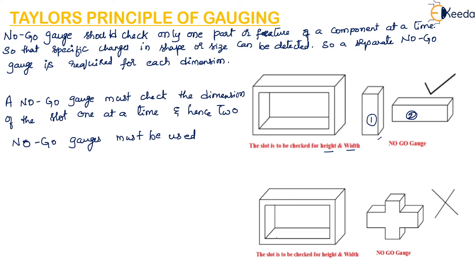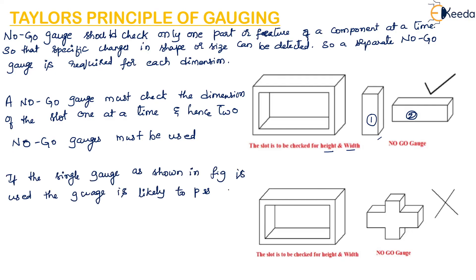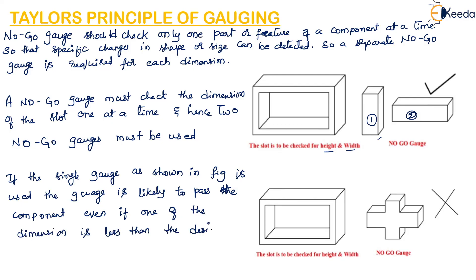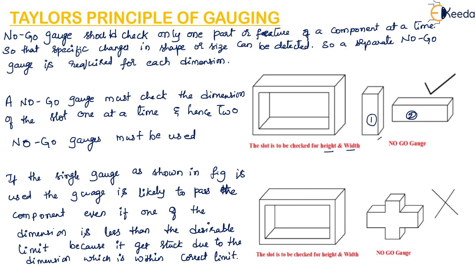In this figure, if a single gauge as shown is used, then the gauge is likely to pass the component even if one of the dimensions is less. We cannot use a single no-go gauge for checking the dimensions because this gauge will pass through the component even if one dimension is less than the desired limit, since it gets stuck due to the other dimensions which are within the correct limit. This no-go gauge cannot be used for checking multiple dimensions at a time. This is about Taylor's principle for gauges.